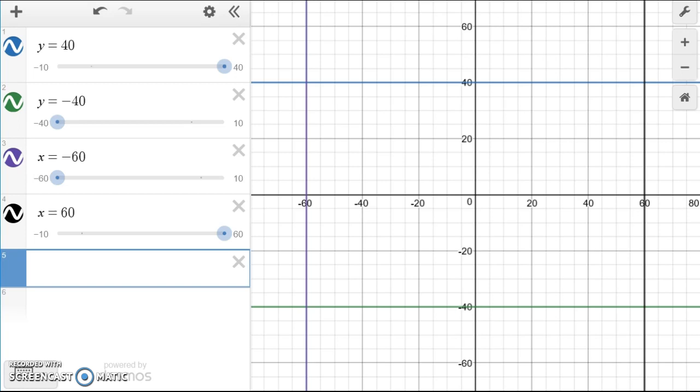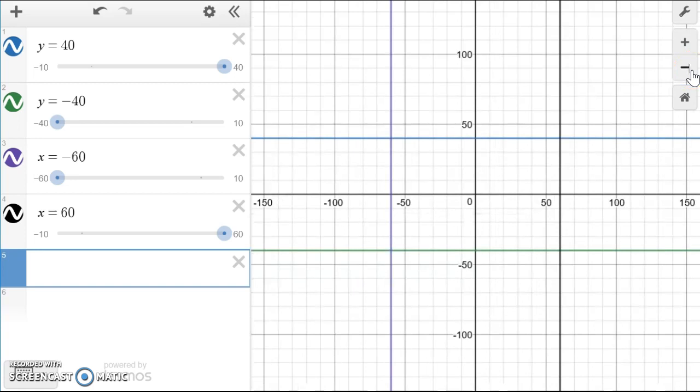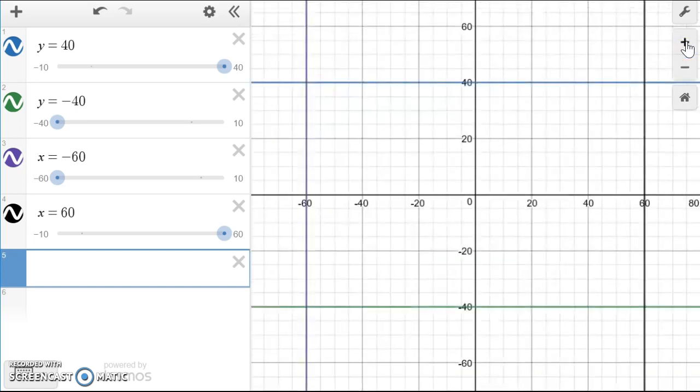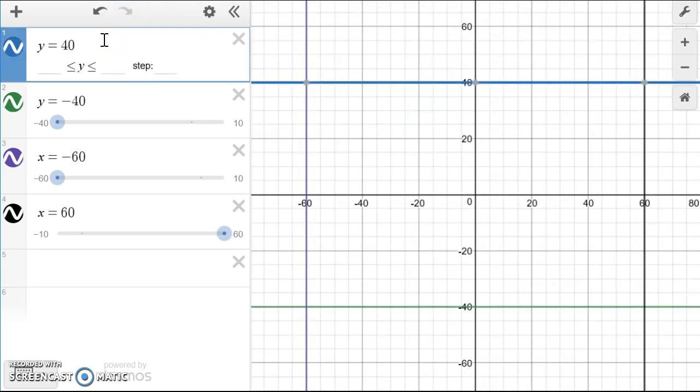However, if we zoom out of this graph, we can see that the lines will continue on forever, which is not what we want because we want to draw a box. In order to draw a box, we have to set the limiting range.